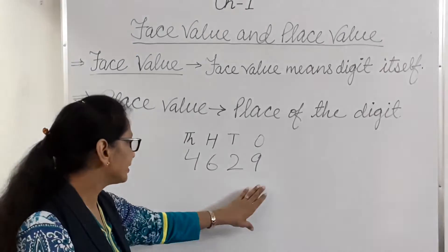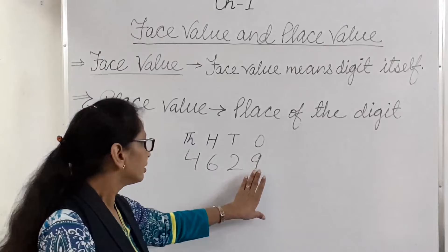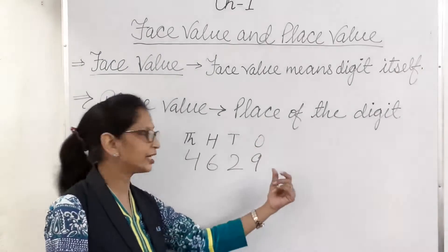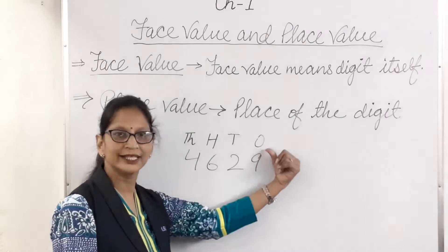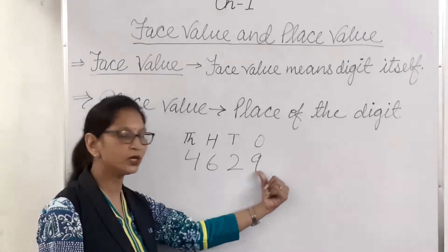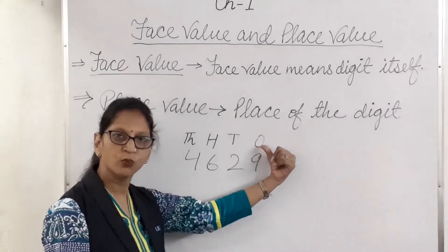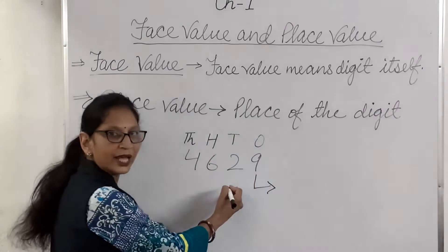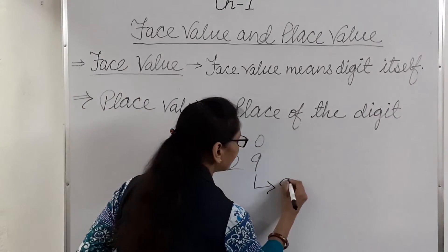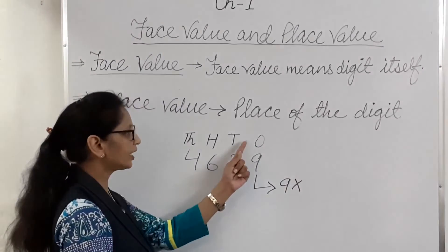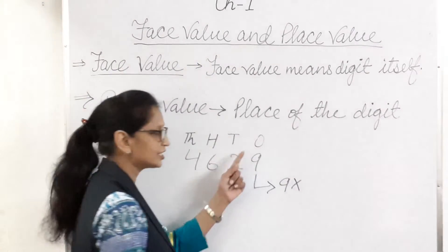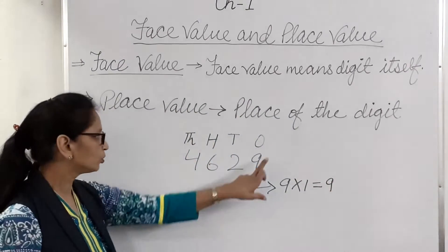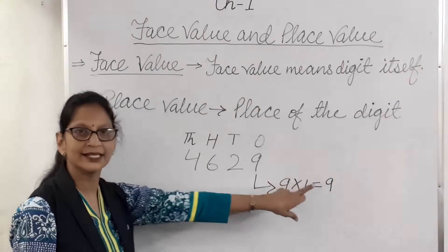Place value is the digit multiplied by the place where it is put. So 9 — where is it put? 9 is put in the ones place. So what is the place value of 9? Place value of 9 is 9 multiplied by 1, which equals 9. So place value of 9 is 9.